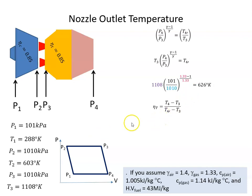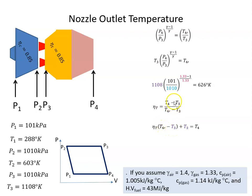The turbine isentropic efficiency equals the actual temperature drop divided by the ideal temperature drop: η = (T3 − T4_actual) / (T3 − T4_ideal). Cross-multiplying and rearranging to solve for the actual T4, and plugging in the values, we get an actual T4 of 690 Kelvin.